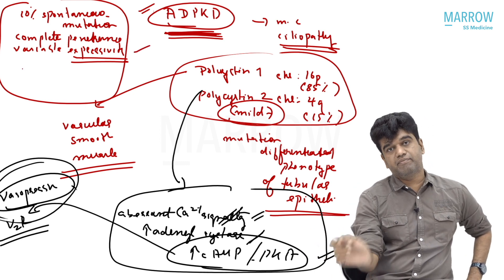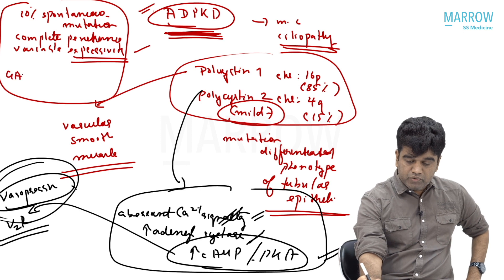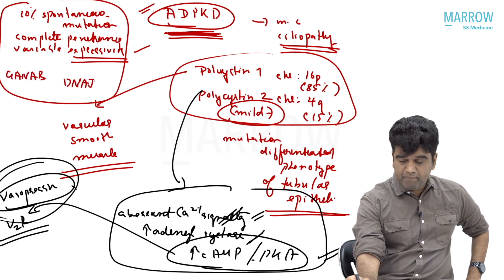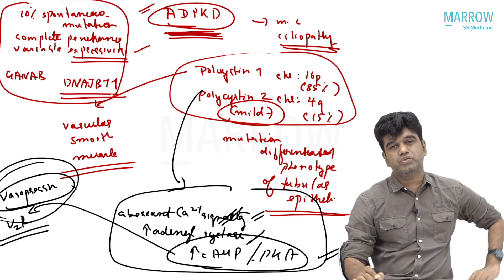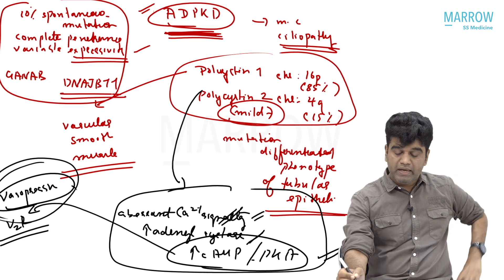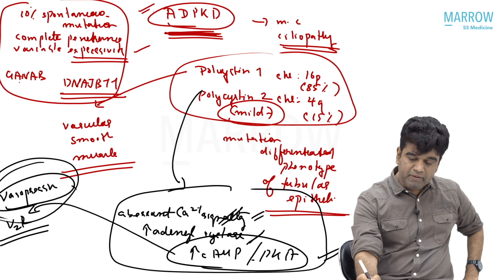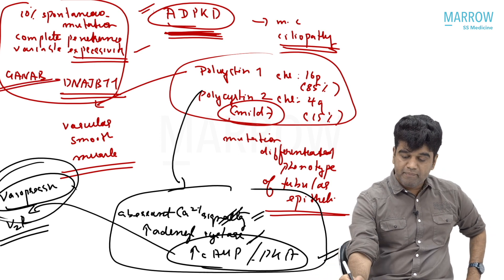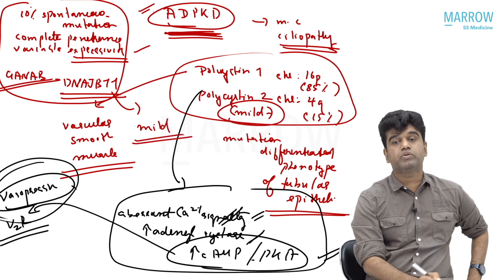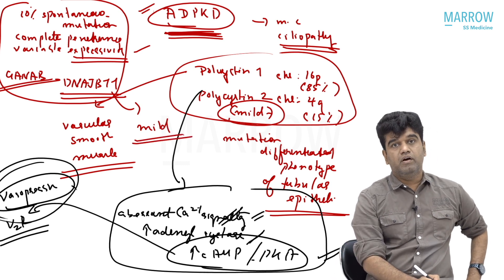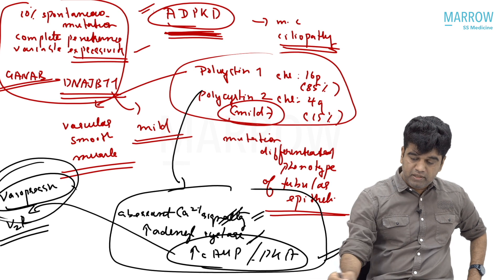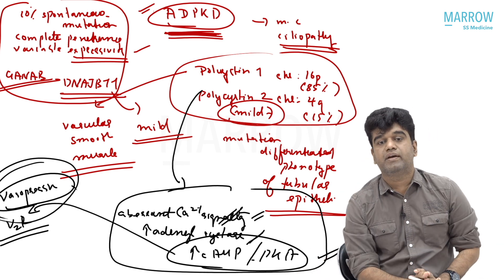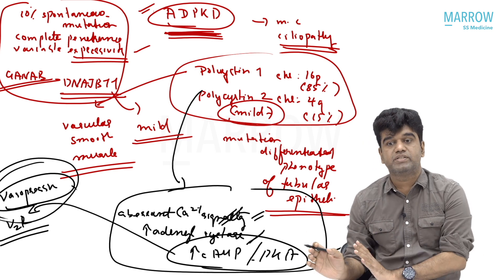Another update highlighted in Harrison is that we now have new genes. One new gene is called the GANAB gene, and the other is called DNAJB11. GANAB was already mentioned in 2021, and DNAJB11 is another new gene for ADPKD apart from polycystin 1 and 2. Both are associated with mild disease. This is the basic pathology idea regarding ADPKD, but we do get questions from here.